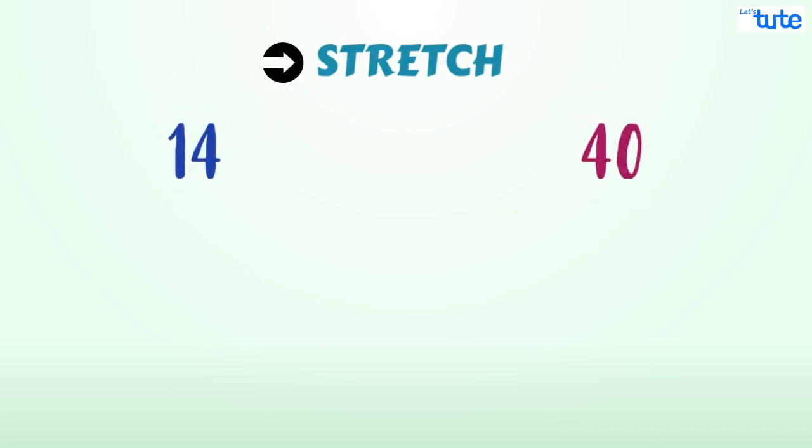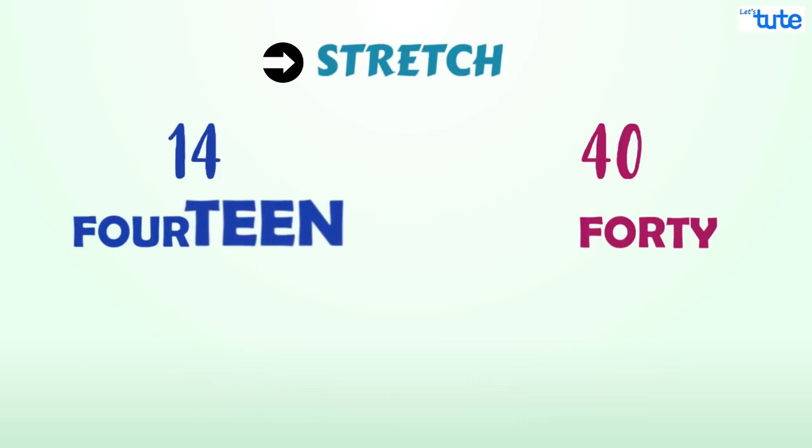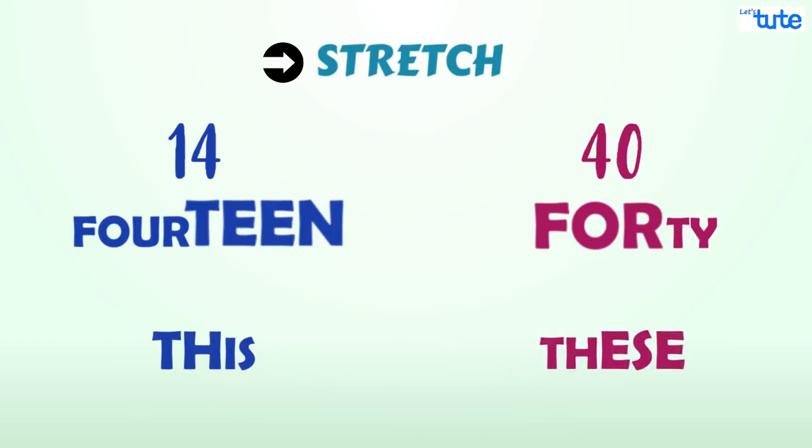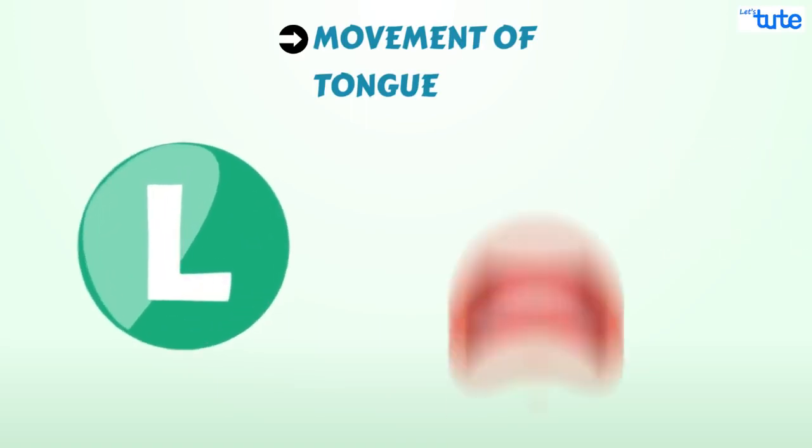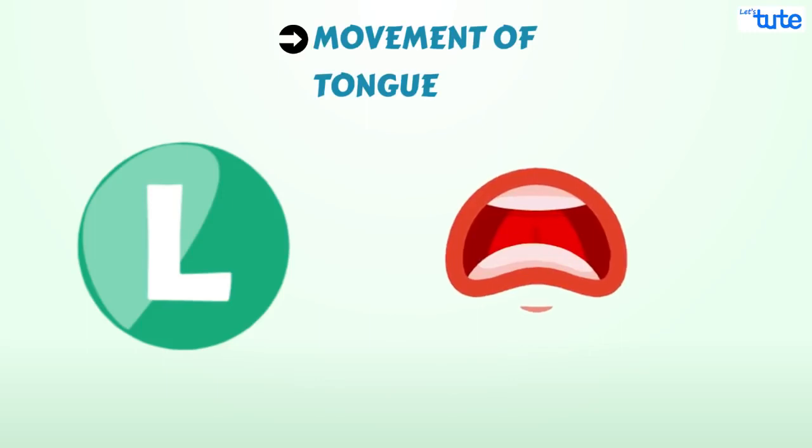Observe your tongue when you pronounce the letters L and R. In the L sound, the tip of the tongue is up against the roof of the mouth behind the front teeth.